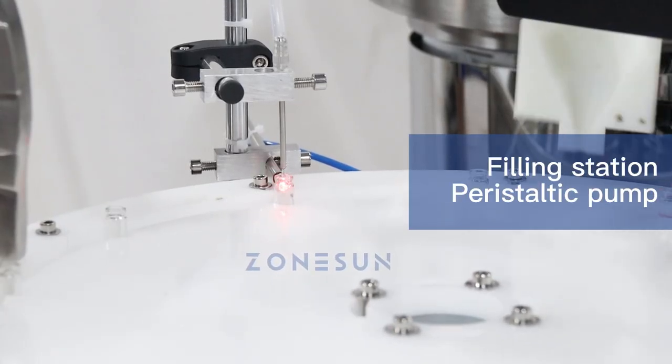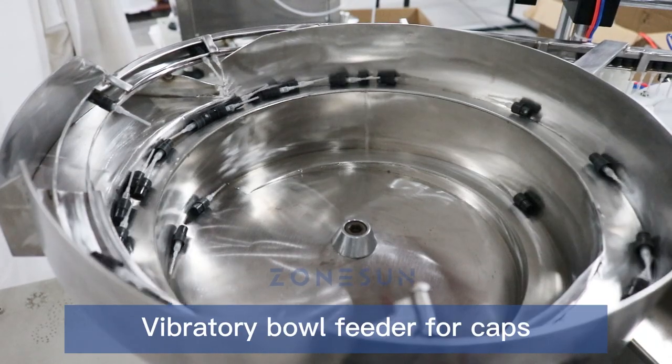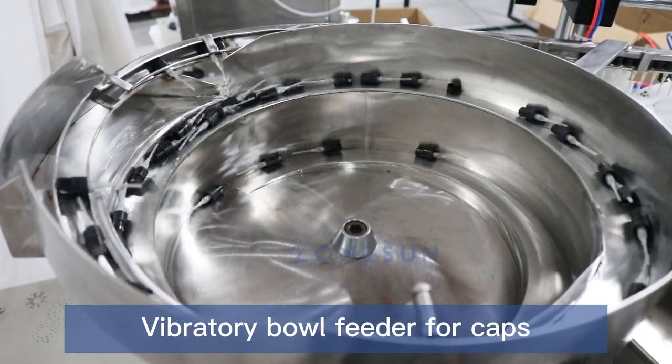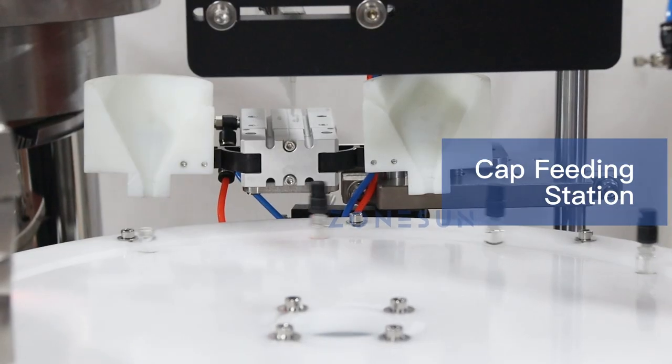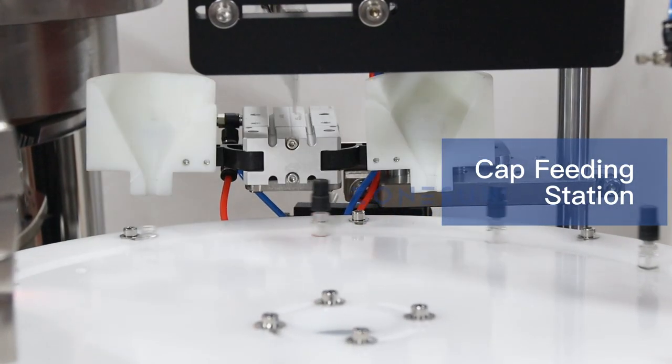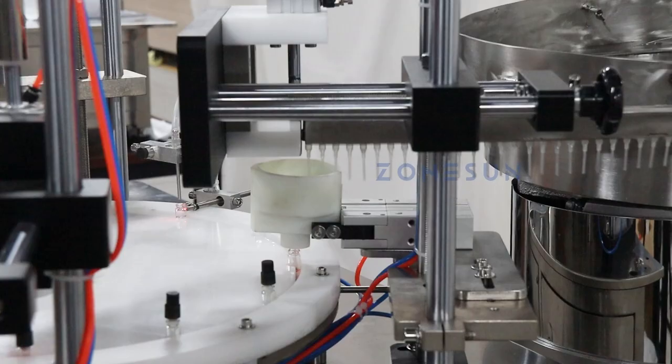The pump offers several advantages, including easy hose replacement and no contact between the liquid and the pump body. The cap feeding station features a vibratory bowl for cap feeding with a cap dropping device that drops the cap onto the bottle.